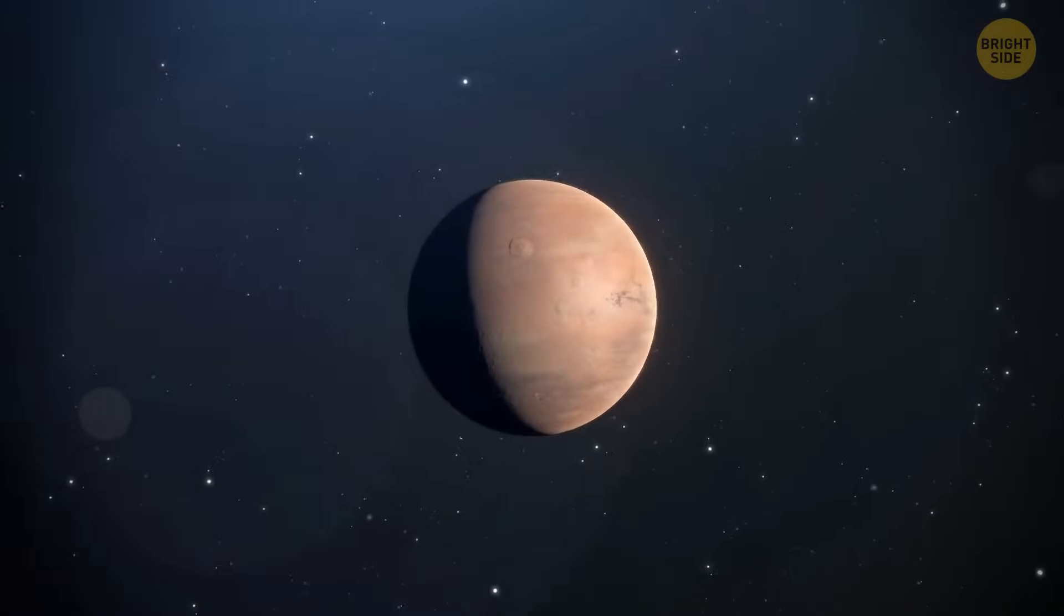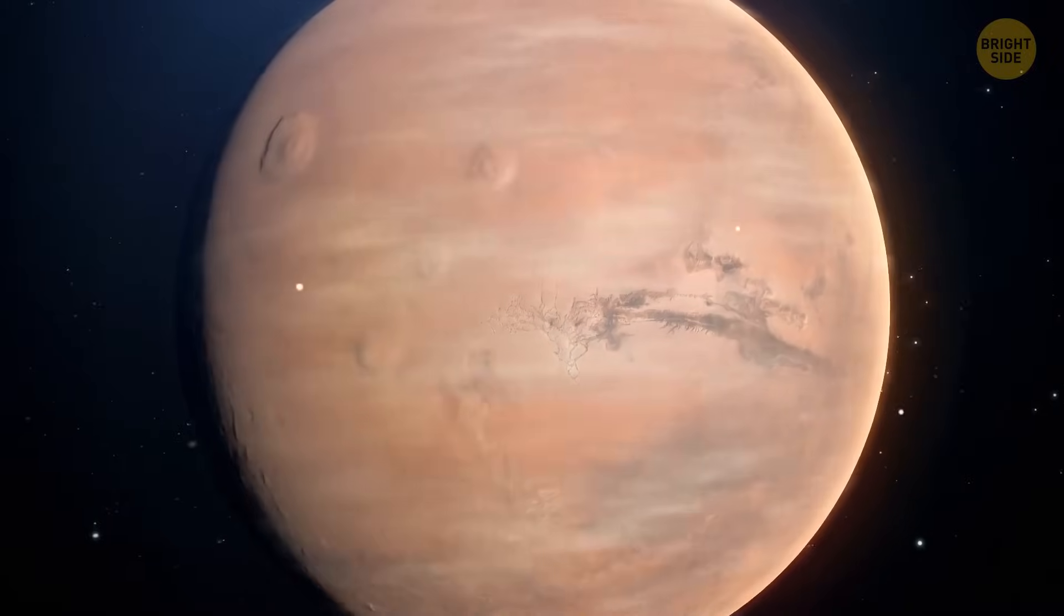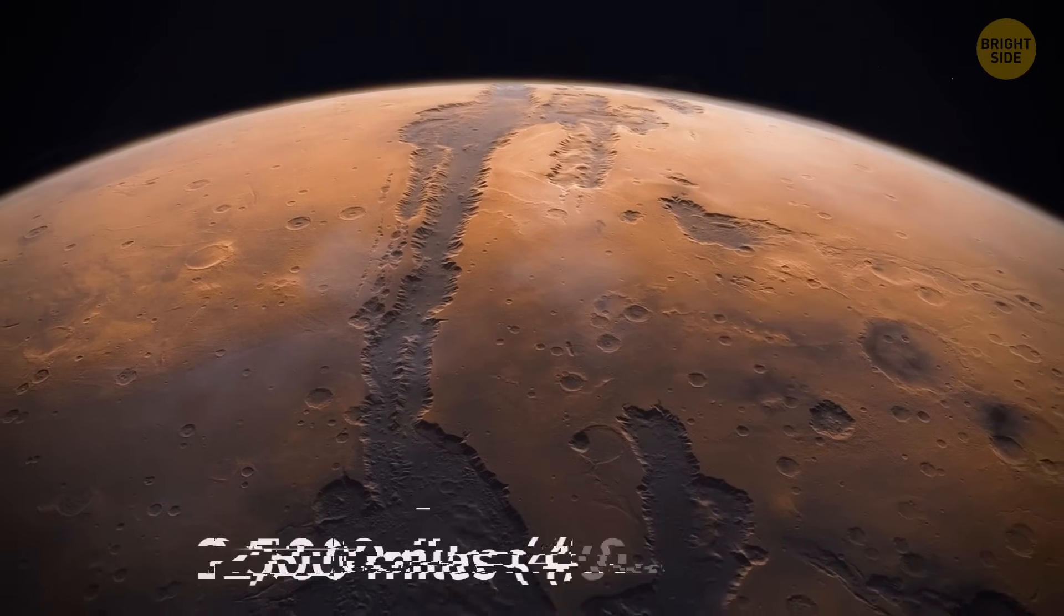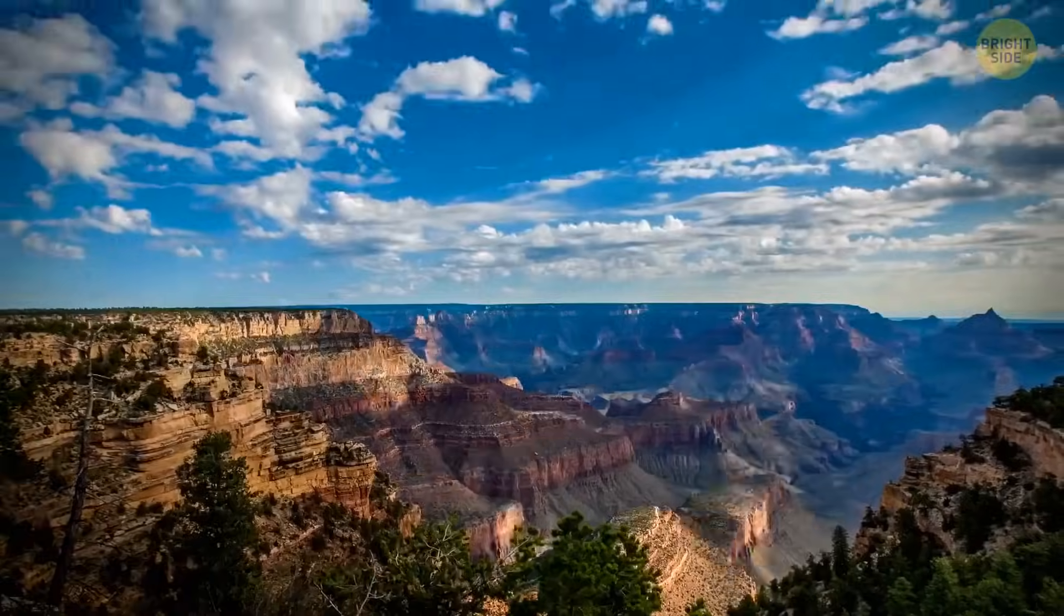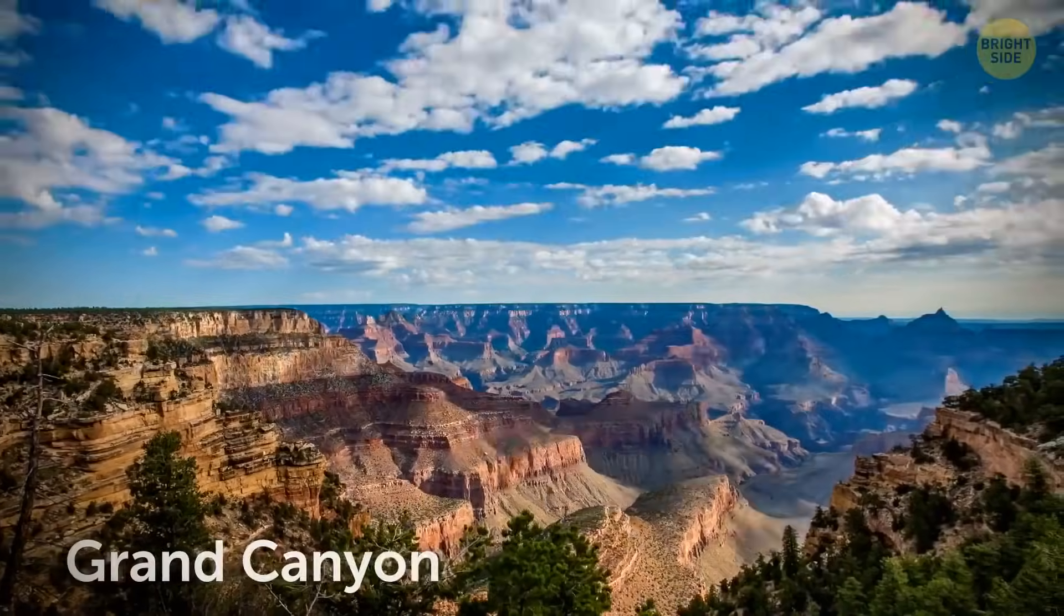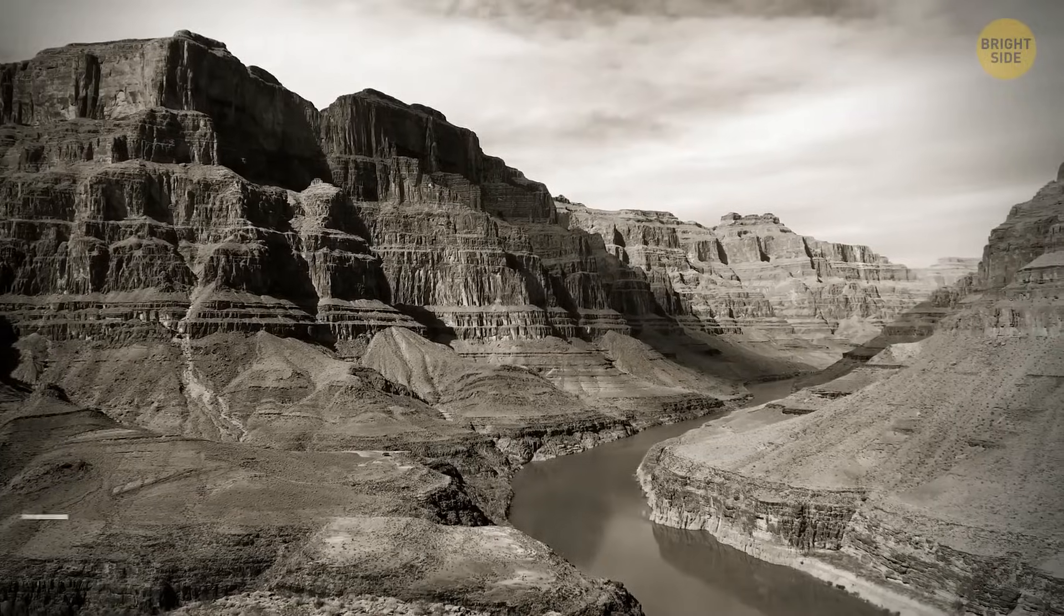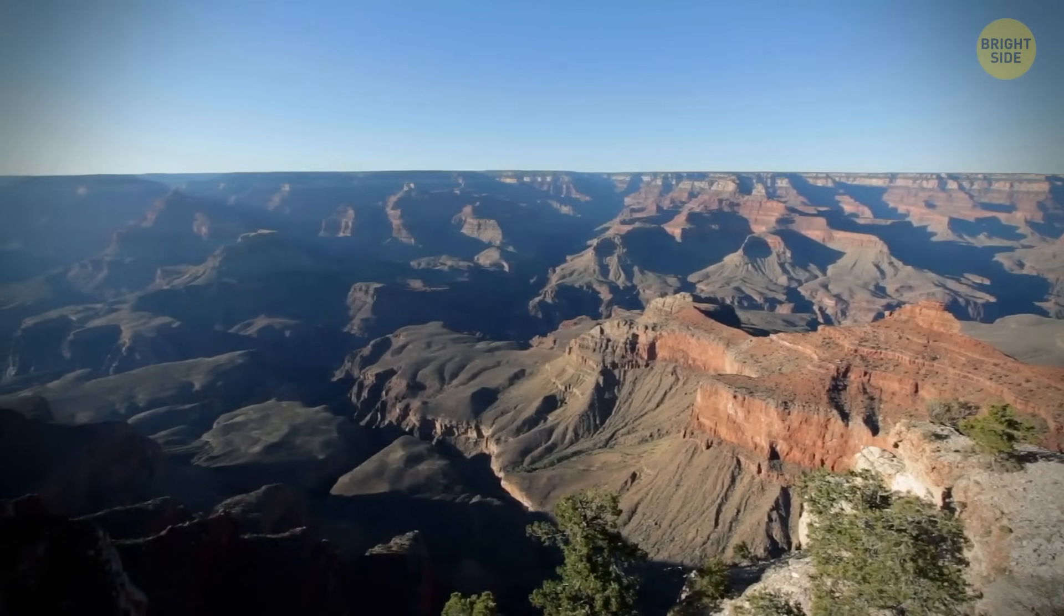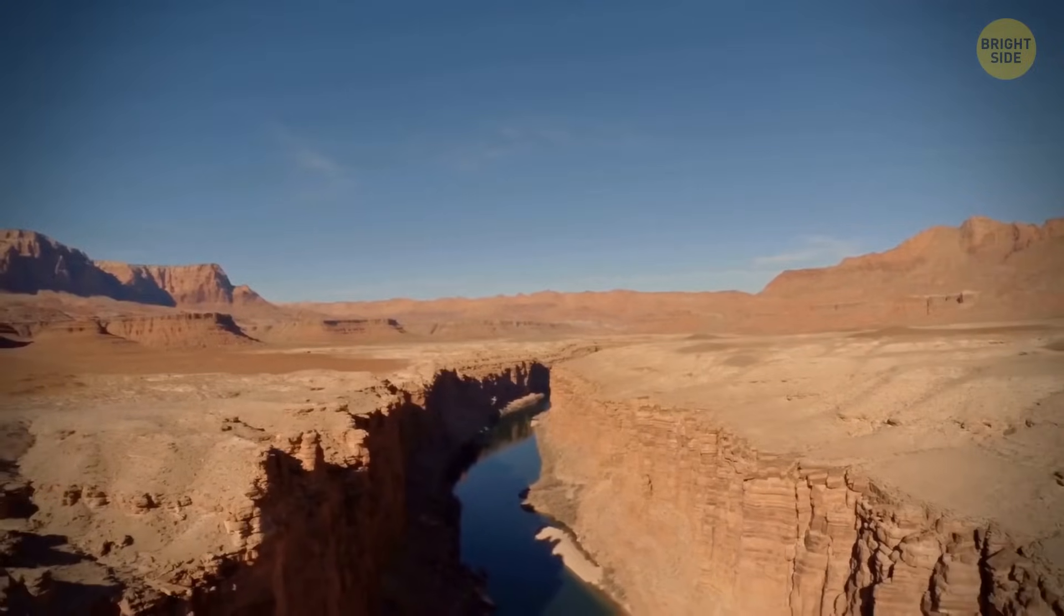Mars contains the biggest valley, Valles Marineris, we've discovered so far. It's a pretty impressive system of canyons, 2,500 miles long. It's five times longer than the Grand Canyon. Researchers first spotted it back in the 1970s. A bank of volcanoes located on the other side of the canyon ridge probably helped form this valley.